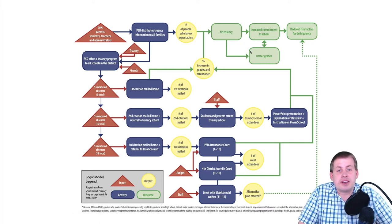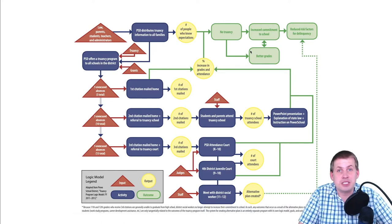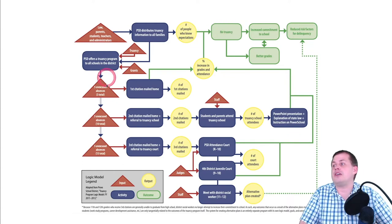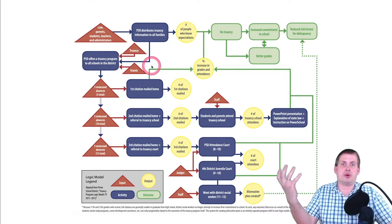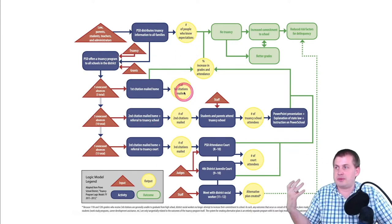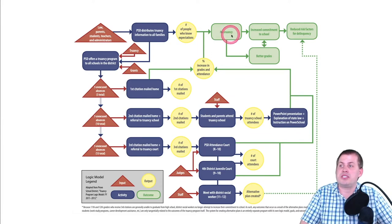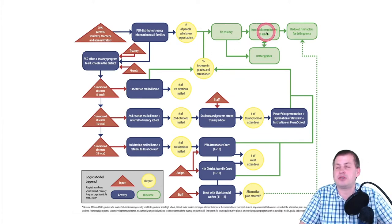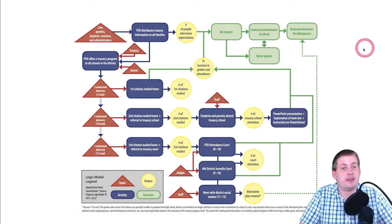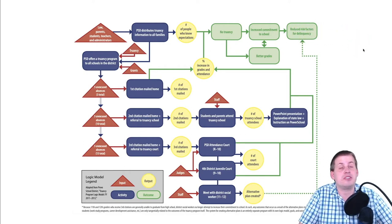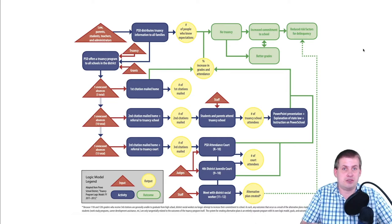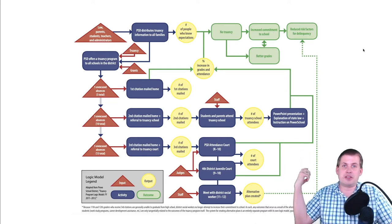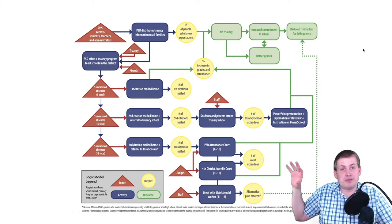Different types of evaluation focus on specific parts of the logic model. With impact evaluation — what we've been focusing on — the goal is to see if all the inputs, activities, and outputs, which we label 'the program,' cause outcomes like no truancy, better grades, increased commitment to school, and reduced risk factors for delinquency. But you also have different types of evaluation that zoom in on other parts of this logic model.